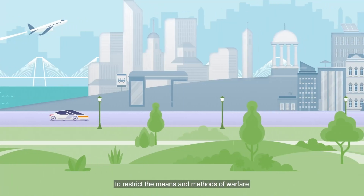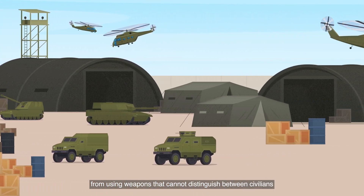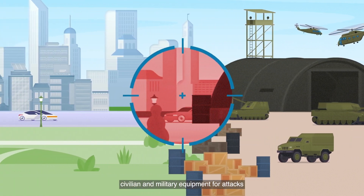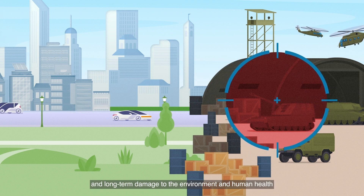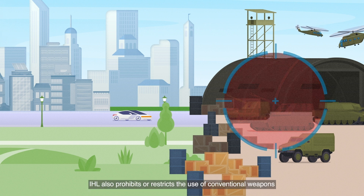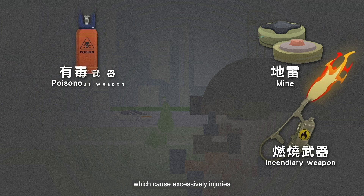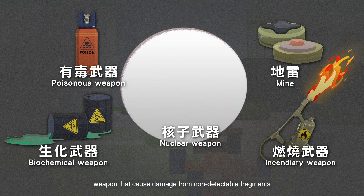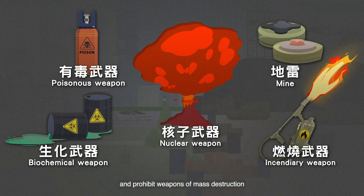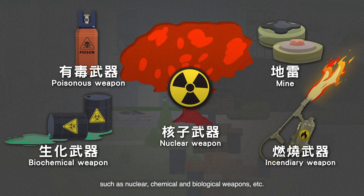Second, to restrict the means and methods of warfare, such as prohibiting belligerents from using weapons that cannot distinguish between civilians and military equipment for attack, so as to avoid unnecessary casualties and long-term damage to the environment and human health. IHL also prohibits or restricts the use of conventional weapons which cause excessive injury or have indiscriminate effects, such as landmines, weapons that cause damage from non-detectable fragments, and incendiary weapons, and prohibits weapons of mass destruction such as nuclear, chemical, and biological weapons.